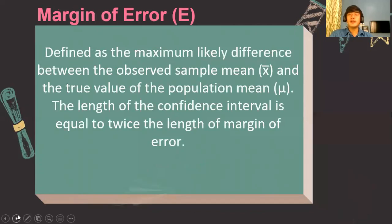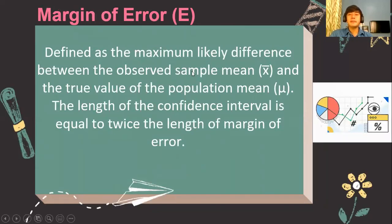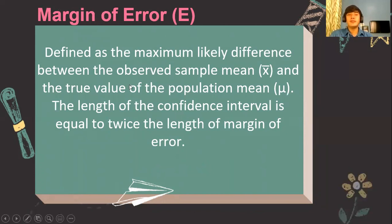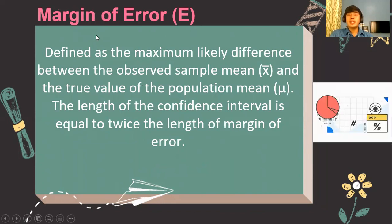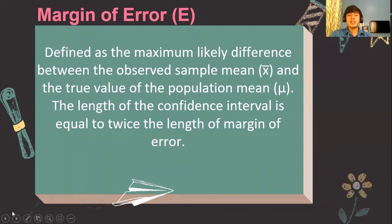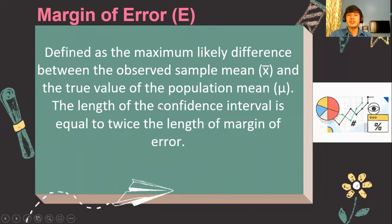The margin of error is defined as the maximum likely difference between the observed sample mean and the true value of the population mean. Later, we will have a formula for computing the margin of error. Margin of error is usually reported for statistical surveys such as election surveys, because it gives us the length of the confidence interval, which is equal to twice the length of the margin of error.